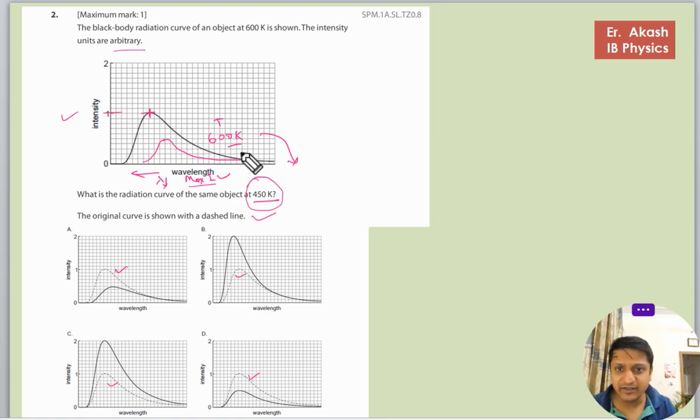So accordingly, as the temperature is less, our answer will be A option because in B option they are saying that the intensity will be much higher and the graph will be at this level. So the new graph will never cross. The maximum intensity will always be less than the original one.